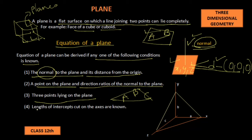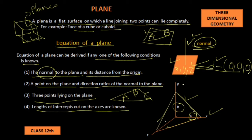Now the fourth and last condition: the lengths of intercepts cut on the axes are known. This is a plane. From the figure you can see that this plane cuts an intercept of length A on the x-axis, an intercept B on the y-axis, and an intercept C on the z-axis. So if the lengths of these three intercepts A, B, and C are known, then also we can find the equation of the plane. So as we have seen, if any one of these four conditions is known, then we can find the equation of a plane.